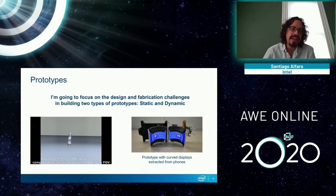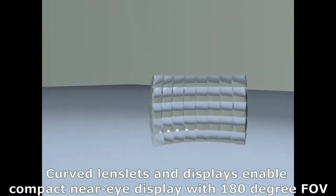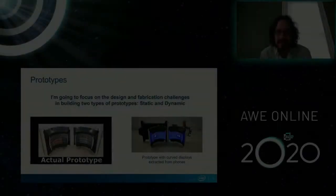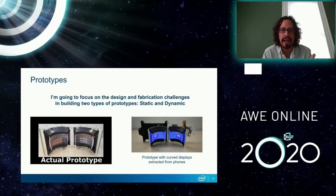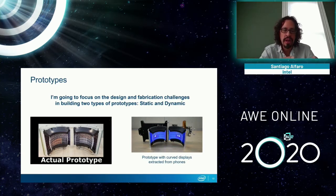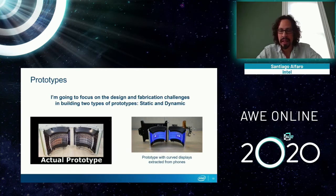Here is an animation of basically how we did the whole thing. We created an array, repeated the lenses, put a curved display behind it, and used this model to create our prototype. We made two prototypes: a static prototype and a dynamic prototype. With the static prototype, we were able to look at all the problems we'd encounter building this without having to deal with the display. With the dynamic prototype, we were able to do things like movement and create a full panorama.